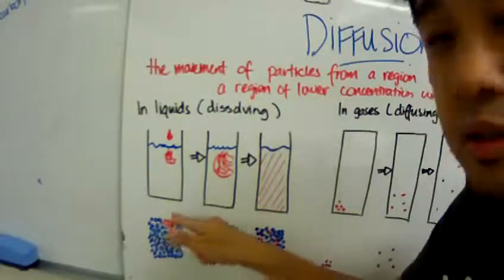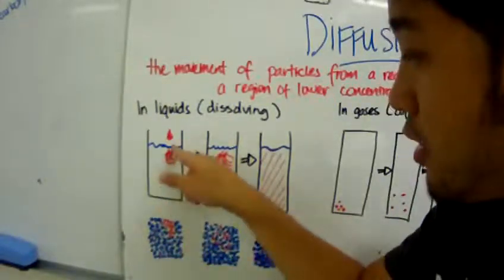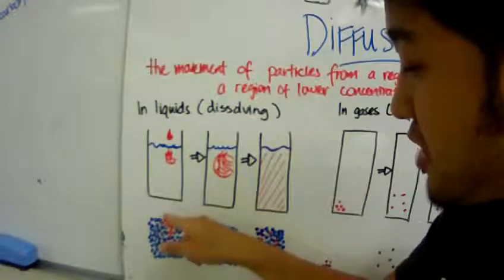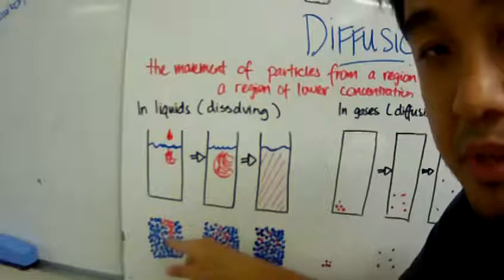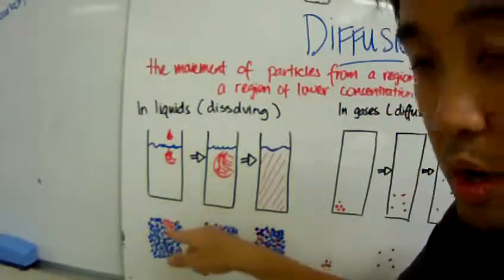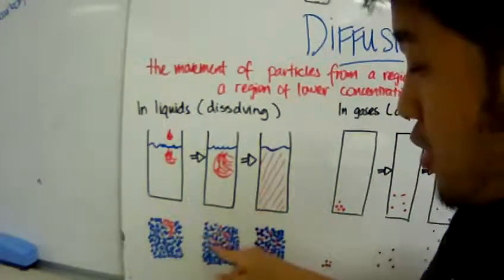When we add the food dye into water, what happens is that you get a high concentration of food dye around here at the very surface of the water.